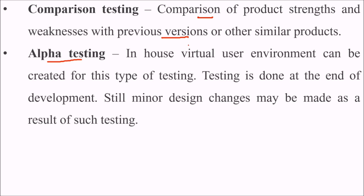Alpha testing — when your system is made and ready to be delivered, an in-house virtual user environment can be created for this testing. This is also known as over-the-shoulder testing. Testing is done at the end of development and mostly users are there to observe the testing. Minor design changes may still be made as a result of such testing.